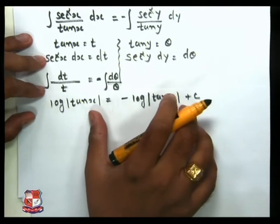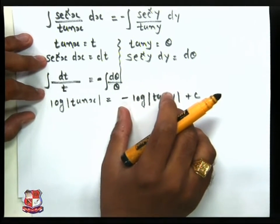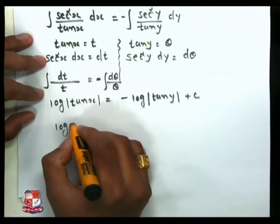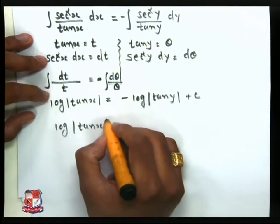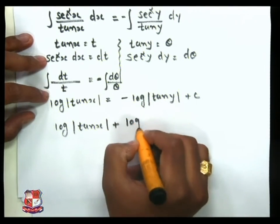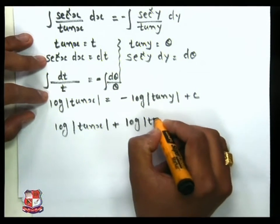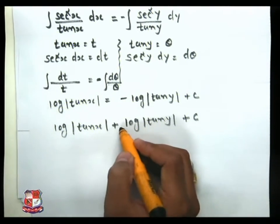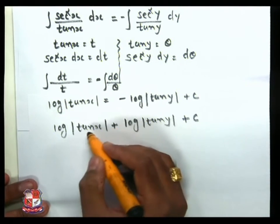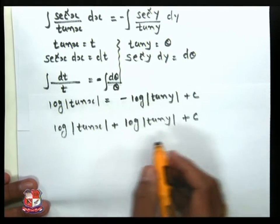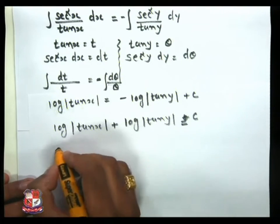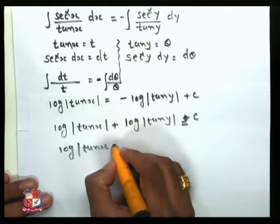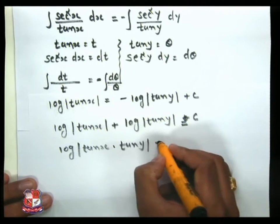This is already an answer, but we can simplify. We shift the negative sign from the right-hand side to the left-hand side so it becomes positive. So: log|tan(x)| + log|tan(y)| + c. By the logarithmic rule, when we add logs we combine them as a product: log(tan(x) · tan(y)) = c.